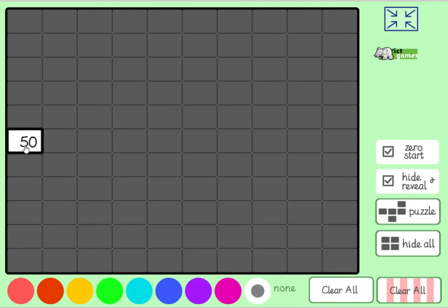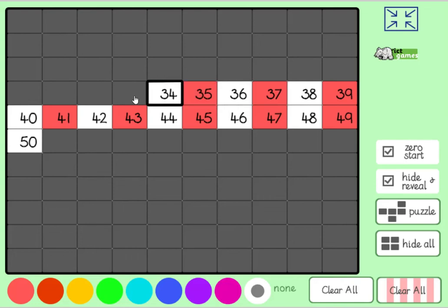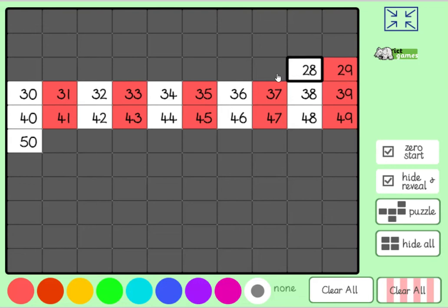Counting backwards in ones on the number square, starting at 50. What's one less than 50? Yeah, 49, 48, 47, 46, are you joining in? 45, 44, 43. What's next? I've just stopped, what's next? One less than 43. Turn to partner? Yeah, awesome. 42, 41, 40, 39, 38, 37, 36, 35, 34, 33, 32, 31, 30. What's next? One less than 30? That's it, 29, 28, 27, 26, 25, 24, 23. And we'll stop there.